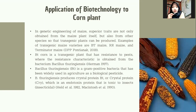Bacillus thuringiensis is a gram-positive bacteria that has been widely used in agriculture as a biological pesticide. Bacillus thuringiensis produces crystal protein Bt, or Cry protein, which is an endotoxin protein that is toxic to insects — functioning as an insecticide.